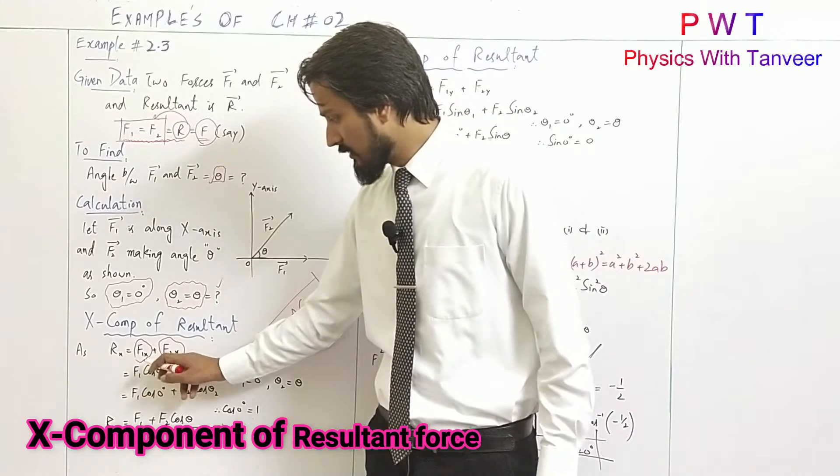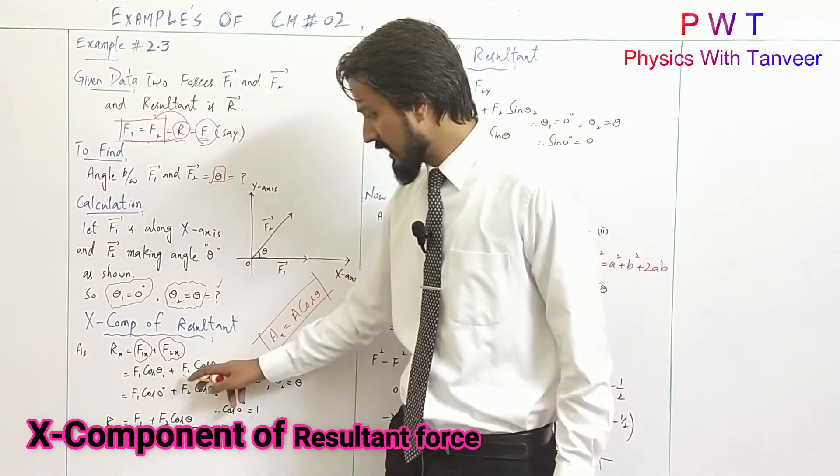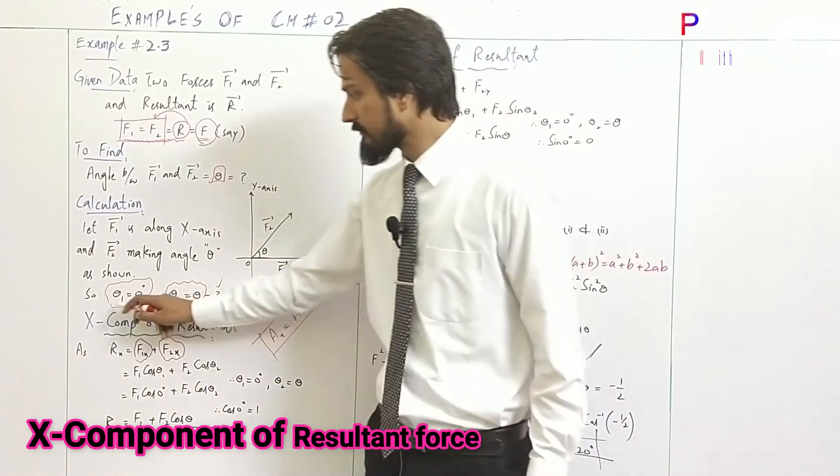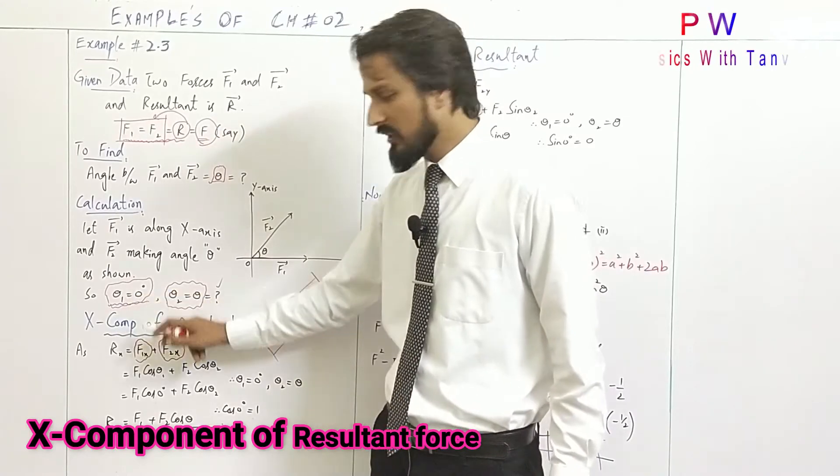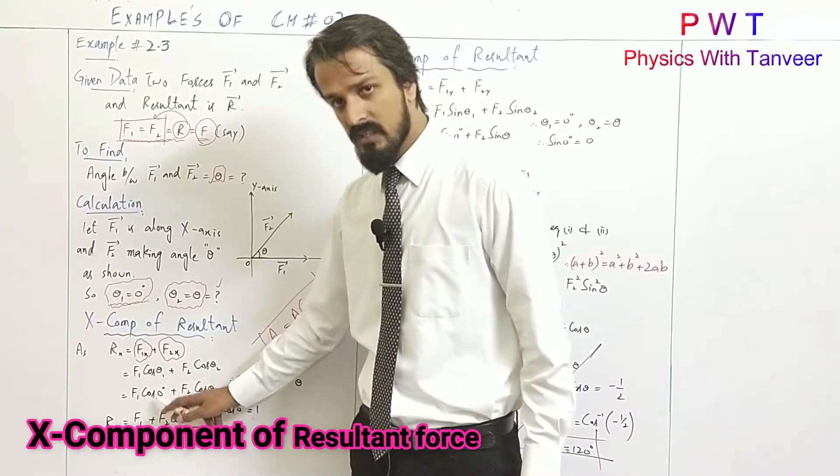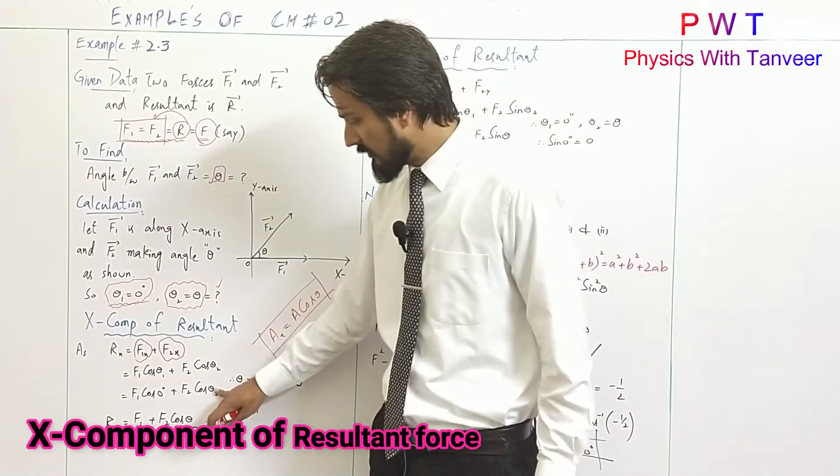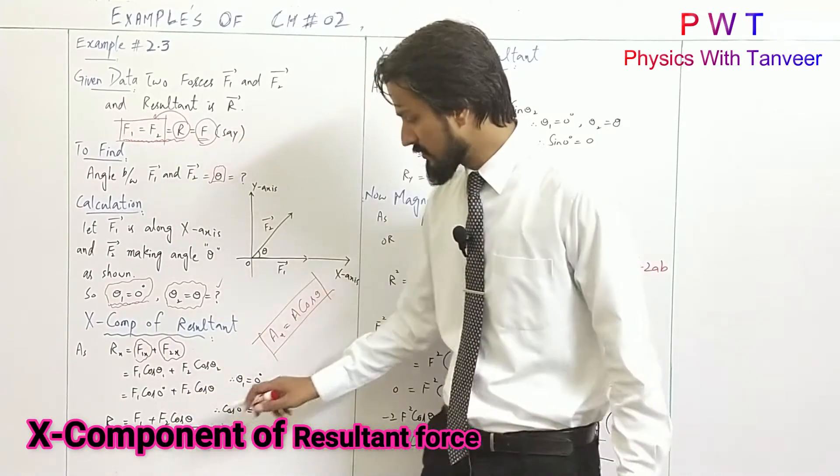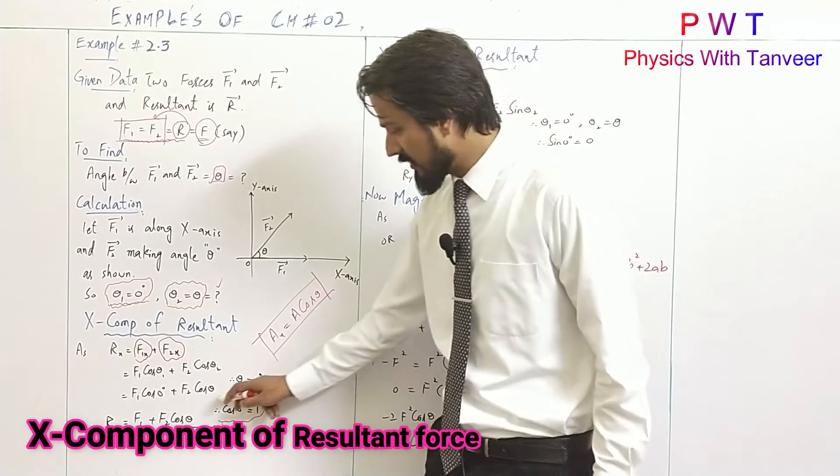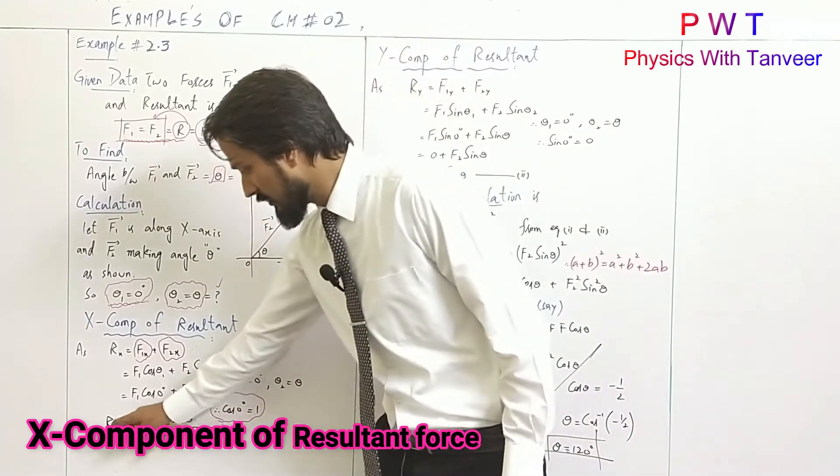The x-component of the resultant is F1 cos theta1 plus F2 cos theta2. Theta1 is 0 degree, theta2 is theta. F1 cos theta1, theta1 is 0, cos 0 is 1, so this becomes F1. This is equation 1, the resultant x-component.